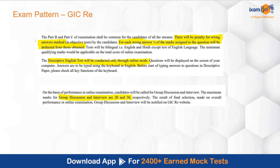Negative marking is present — for each wrong answer, one-fourth of the marks assigned to the question will be deducted. Aapka descriptive test online hai aur descriptive test ke marks bhi add honge. Group discussion is 20 marks and interview is 30 marks. So the written exam is 150 marks, GD is 20 marks, and interview is 30 marks — written exam ki cutoff 150 mein se niklegi, aur final cutoff 200 mein se niklegi.